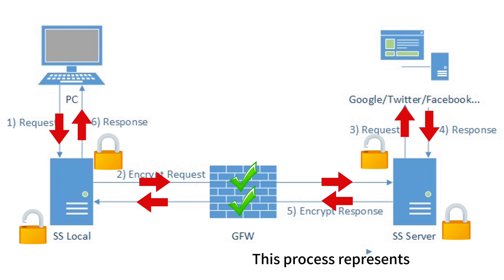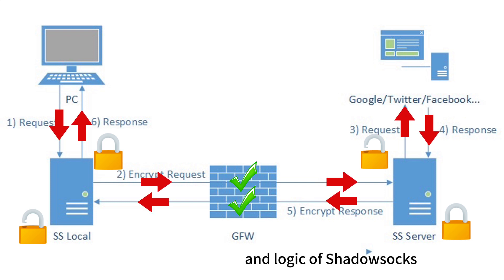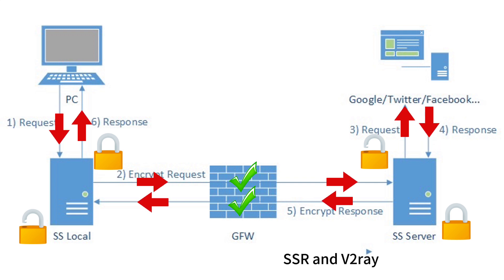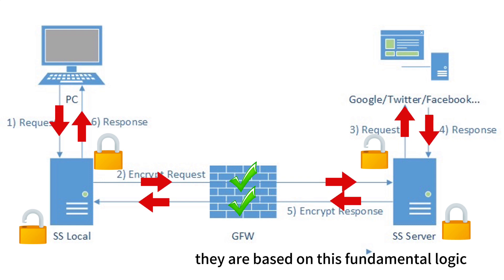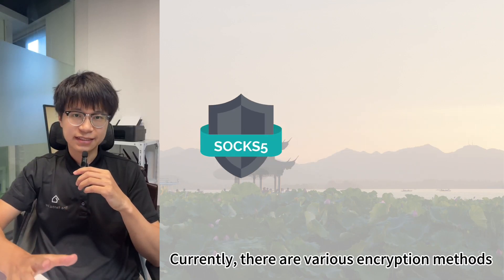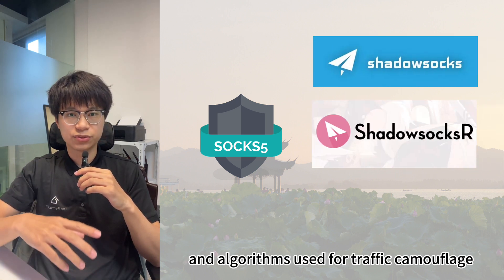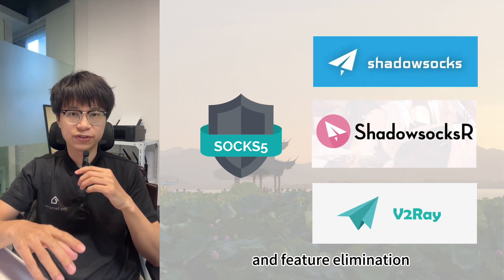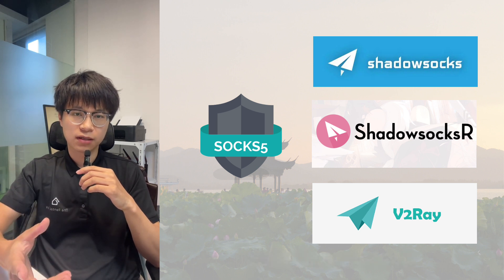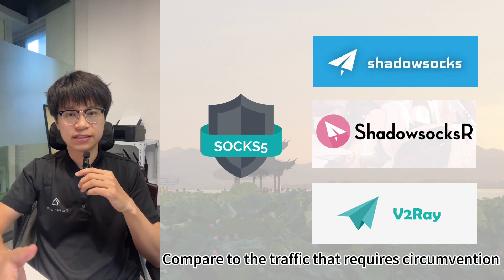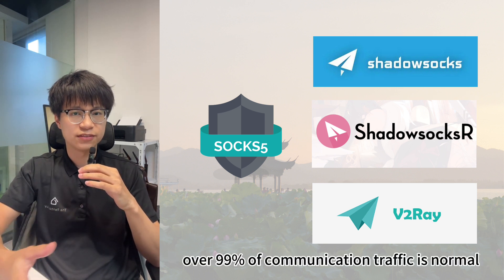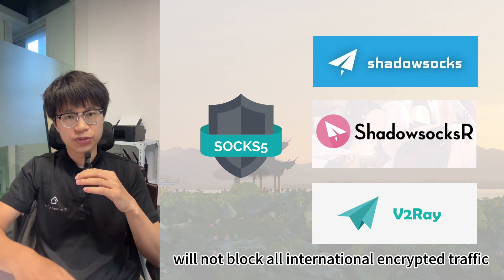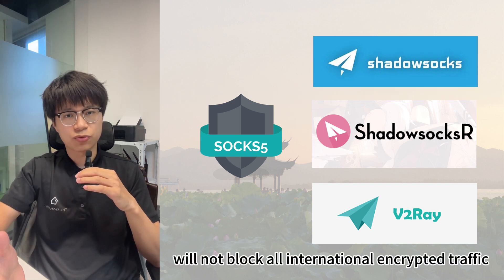This process represents the basic working principle and logic of Shadowsocks. Although subsequent tools like SSR and V2Ray have minor differences in specific details, they are based on this fundamental logic. Currently, there are various encryption methods and algorithms used for traffic camouflage and feature elimination within the grid firewall. Compared to the traffic that requires circumvention, over 99% of communication traffic is normal. Therefore, the GFW will not block all international encrypted traffic.